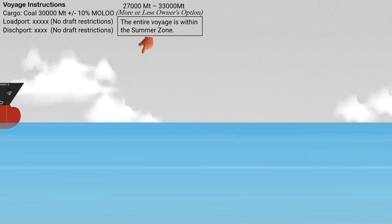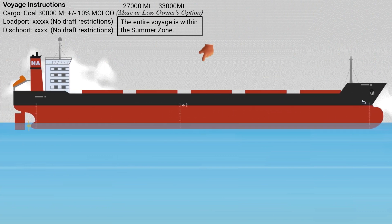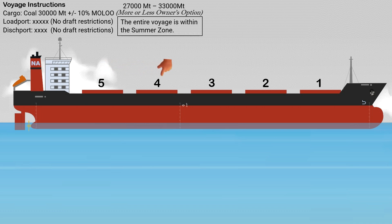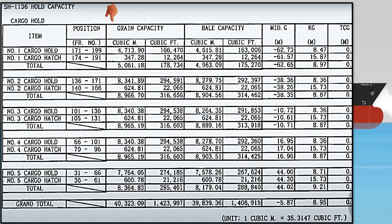Our ship is a bulk carrier composed of five cargo holds: number 1, 2, 3, 4, and 5. To determine the maximum amount of cargo to be loaded for each cargo hold, we need the hold capacity table. This table is provided by the ship builder for every ship and can be found in the ship's loading plan or stability booklet. First, we need to take the volume of each hold. The volumes are given in cubic meters and cubic feet, in both grain and bale capacity.